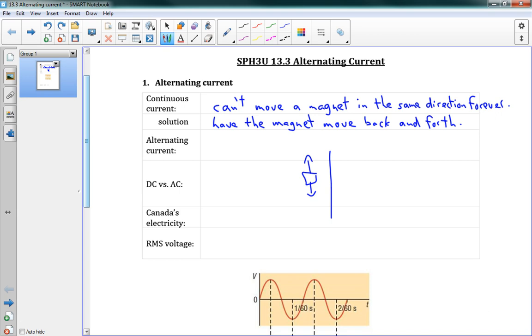But, an interesting thing happens when we do that. Let's say we're moving our magnet up, and we get to some maximum point. Then we move it down, and we get to some minimum point. And up and down and up and down.